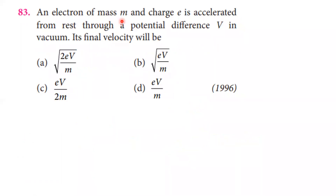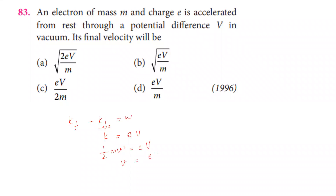An electron of mass M and charge e is accelerated from rest through a potential difference V in vacuum. What is the final velocity? The work done equals the change in kinetic energy. Since the electron starts from rest, final kinetic energy equals work done, which equals charge times potential difference: one half M v squared equals eV. Solving, v equals the square root of 2eV divided by M. The first option is correct.